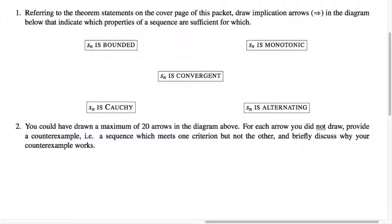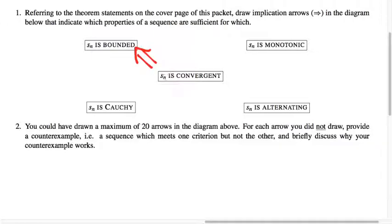The first relationship in this diagram we're going to look at is Theorem 2.11, which shows that if we know a sequence is convergent, that implies the sequence is also bounded. We'll also think about whether the converse might be true, but for starters, let's focus on the implication in this direction. Theorem 2.11: every convergent sequence is necessarily bounded.